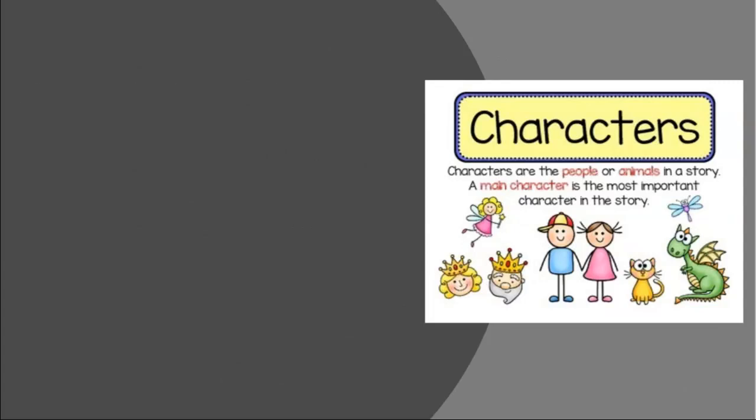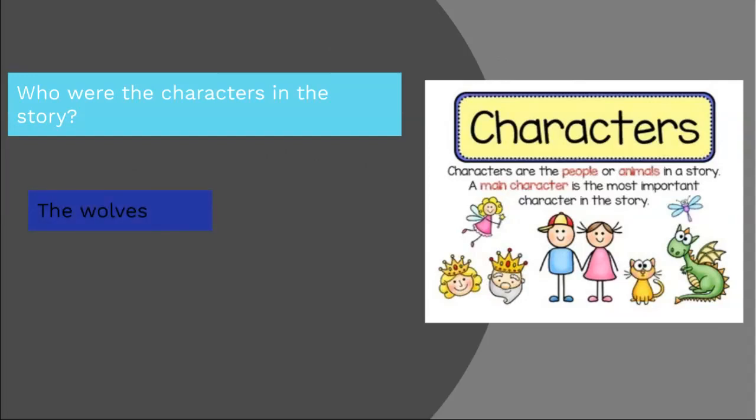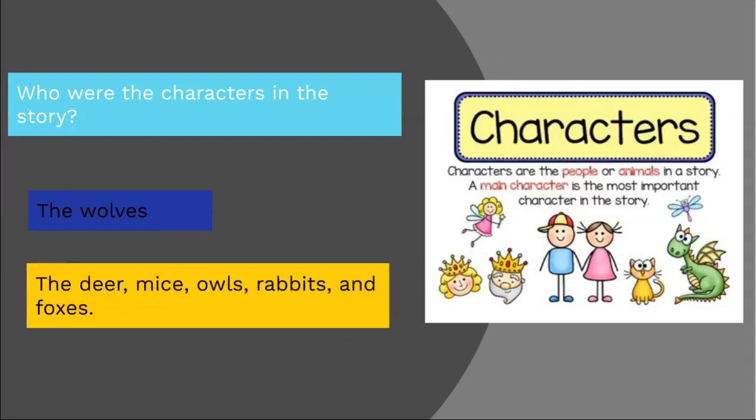So who were the characters in our story? We had the wolves who were the major characters and most events revolved around them. There were also the deer, mice, owls, rabbits, and foxes because as you all know in any environment there is a relationship between all living things in this environment or ecosystem.